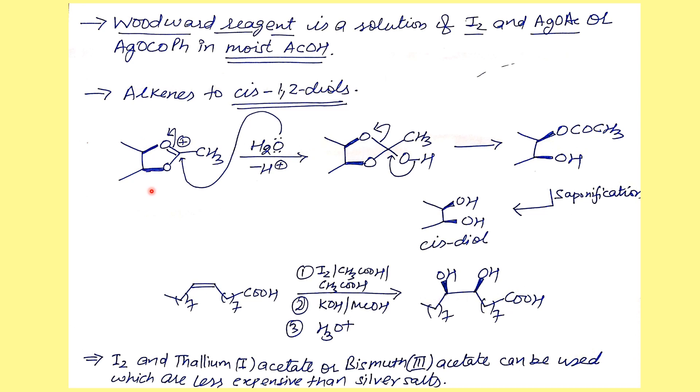In the case of Prevost conditions, there was no water present, so the acetate ion, a very weak nucleophile, attacked and gave us the trans-diacetate product. But here water is a much stronger nucleophile, so it attacks this particular position to release the positive charge, and then this bond comes back to give us the diacetate and hydroxyl-mercury. Since this particular side is not disturbed at all, these positions remain cis. This is subjected to saponification to give us the cis-diol.